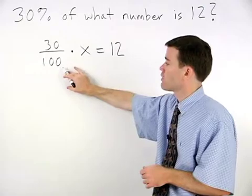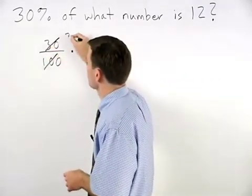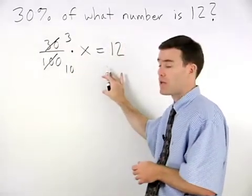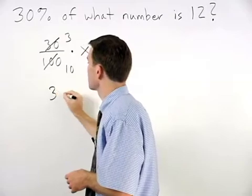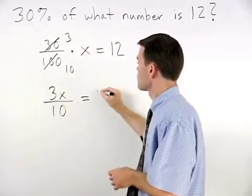Notice that 30 over 100 can be reduced to 3 over 10. So rewriting our problem, we have 3x over 10 equals 12.